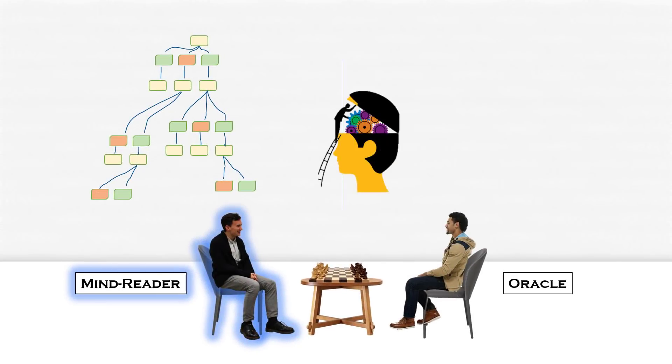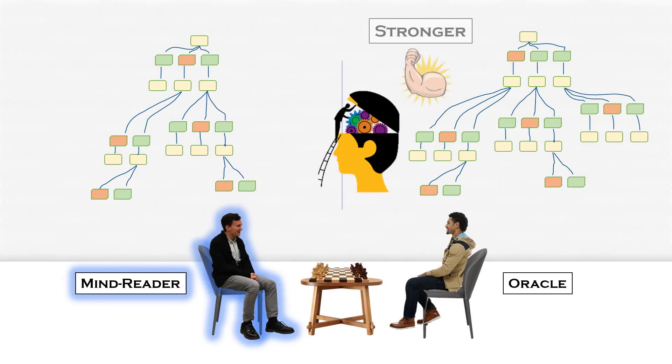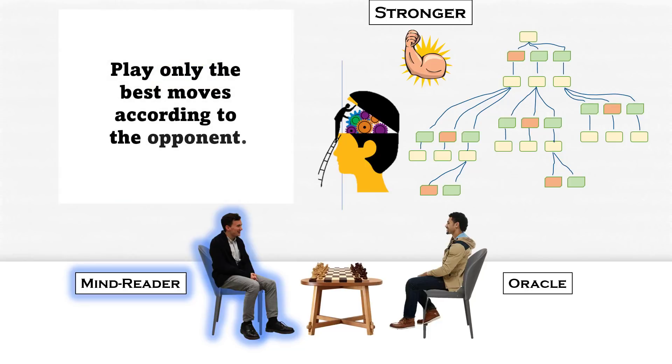However, if the mind reader finds that his opponent has deeper calculation compared to him, then he will simply play the moves that his opponent thinks are the best moves. So the game will eventually end up in a draw as they both are following the same depth calculation.